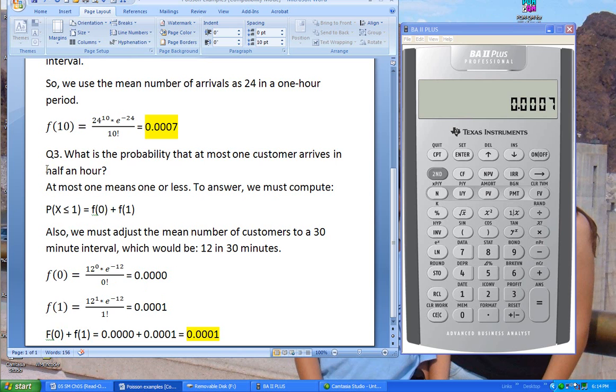But wait, here now, our interval that is given to us is a half hour. So again, we need to adjust the mean number of customers arriving for a half hour period. If eight customers come in 20 minutes, then 12 come in 30 minutes. So our mean to be used is 12, our average number to be used is 12, and our x is 0 and 1.